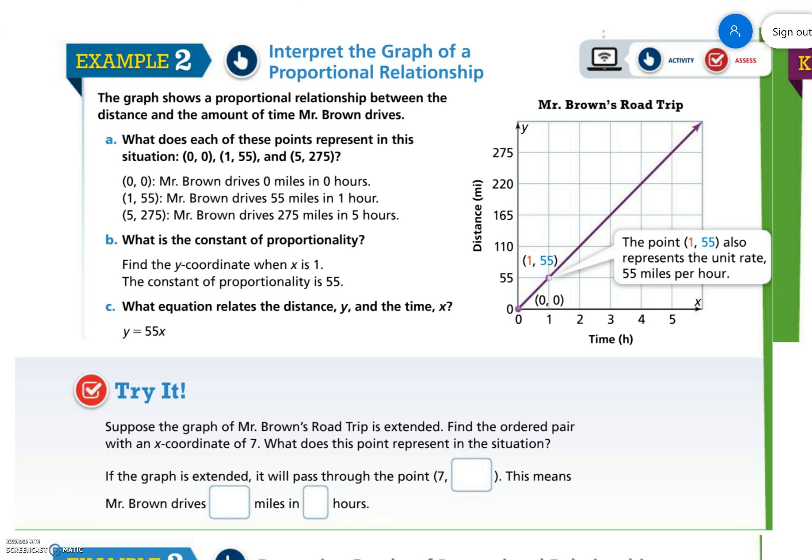Example number two. The graph shows a proportional relationship, so it's telling us it is proportional. And hey, look, it starts at zero and is straight.